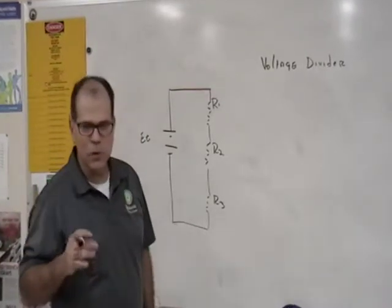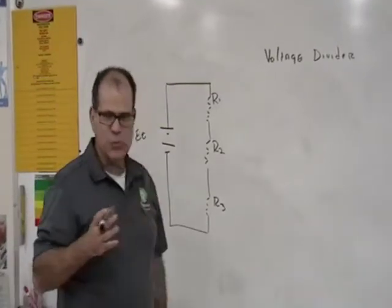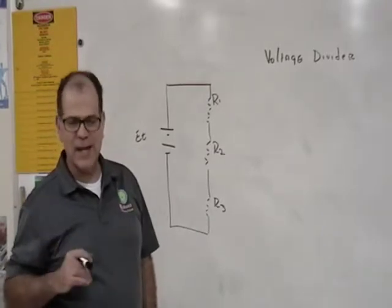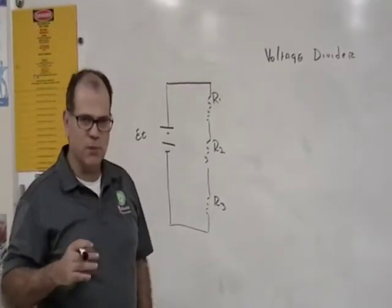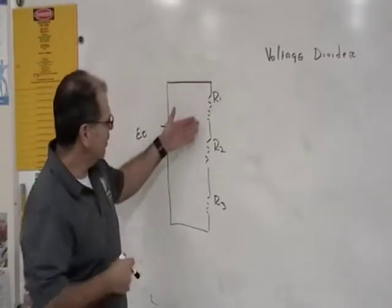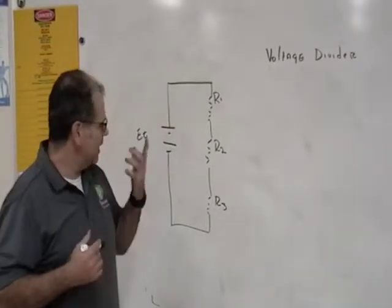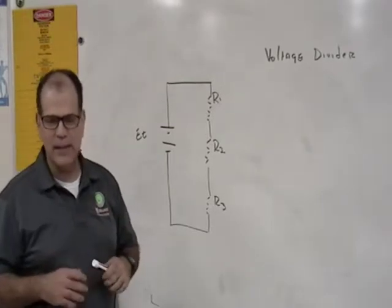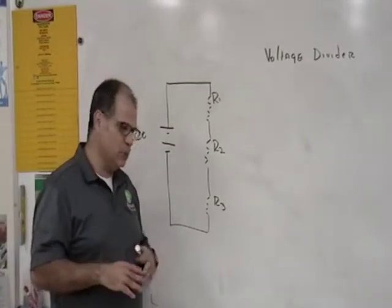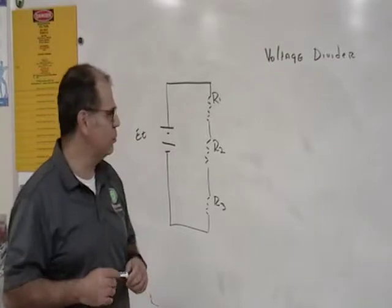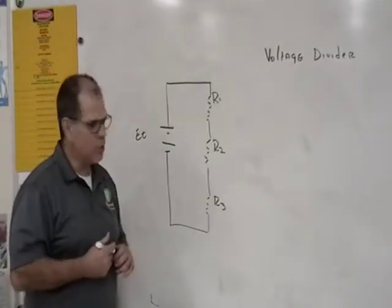There's a thing called voltage dividers that uses what's called the law of proportionality in order to solve for voltage drops across any three resistors that could be in series. Keep in mind that the law of proportionality is nothing more than derived from Ohm's law as well. Let me show you what I'm talking about.